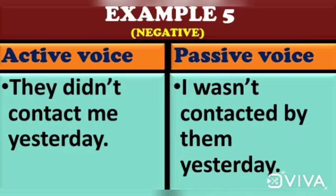The fifth example: 'They didn't contact me yesterday.' Here, 'me' is the object, which is taken to the beginning. It becomes: 'I wasn't contacted by them yesterday.'